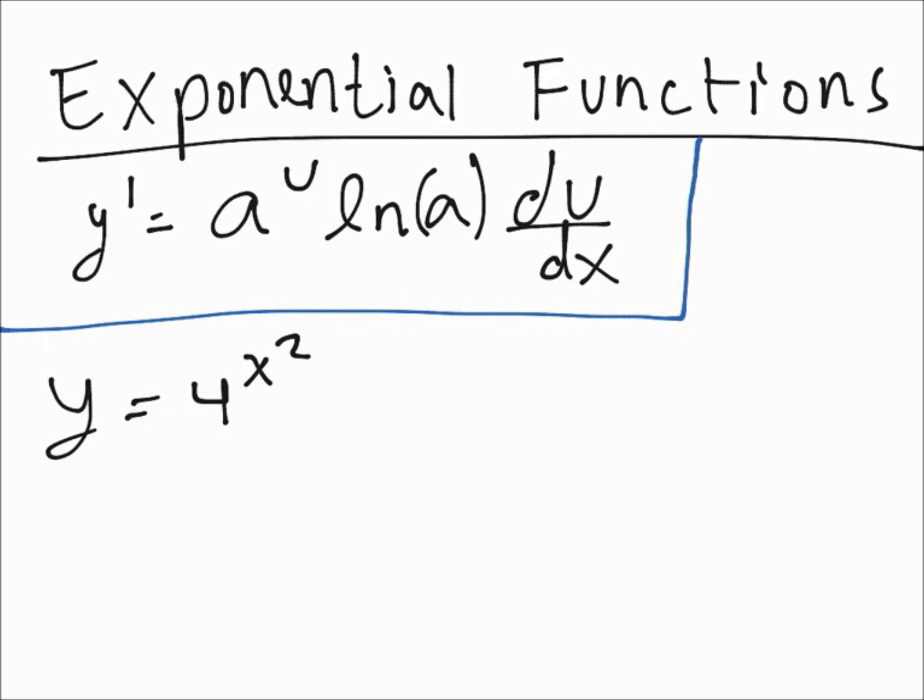Our constant to the u, just write the whole function again, so that's a to the u times the ln of the constant a times the derivative with respect to x of u, and u again is just a function.